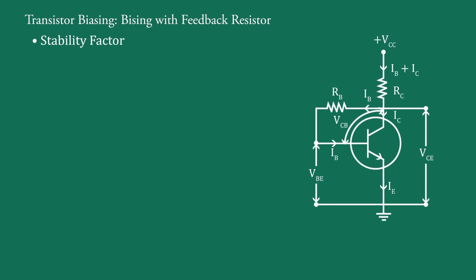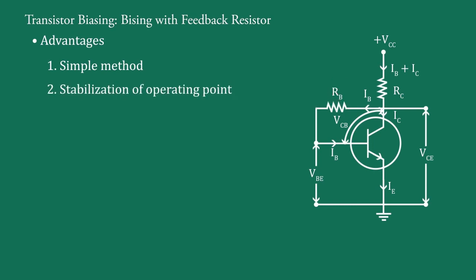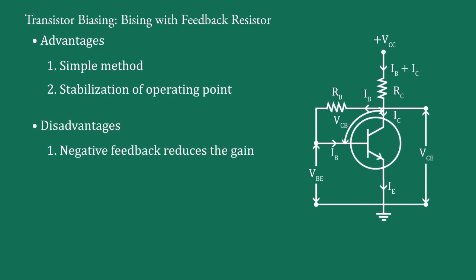Now let's look at the advantages and disadvantages of the circuit. Advantages: First, it is a simple method as it requires only one resistance RB. Second, the circuit provides stability of the operating point — stability is better compared to the fixed bias circuit. Disadvantage: The circuit provides negative feedback, which reduces the gain of the amplifier. Since RB is connected from collector to base, it acts as negative feedback, and hence the gain is reduced.